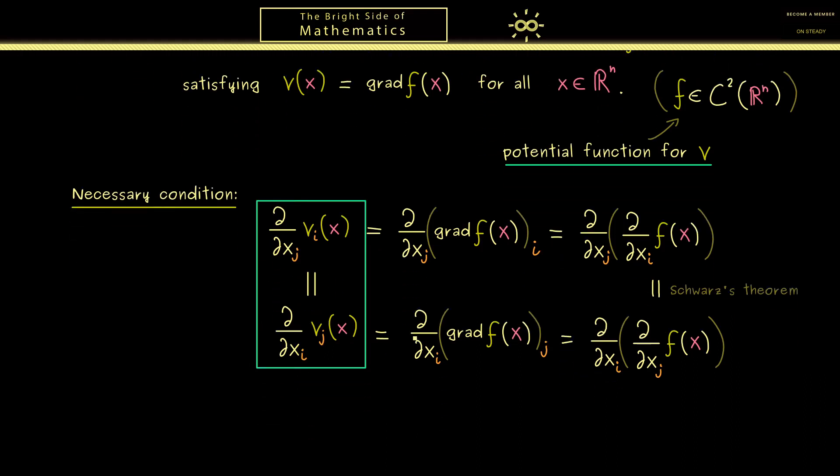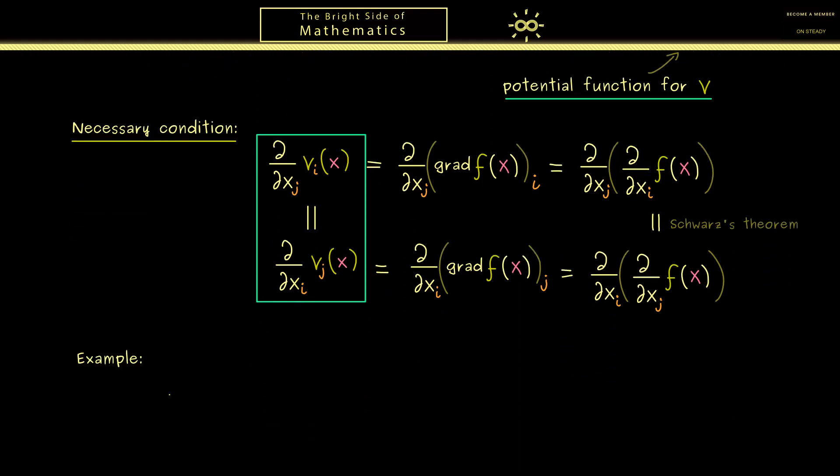With this, I would say we can look at an example. We simply take a vector field where this necessary condition is not fulfilled. And it turns out that it is not hard at all to find such an example in R^2.